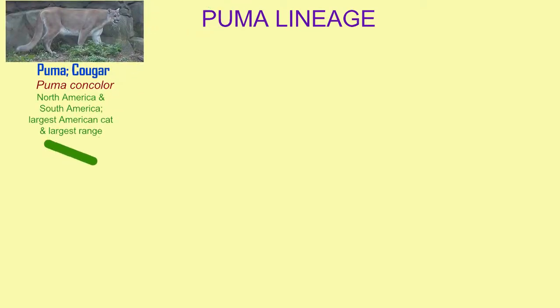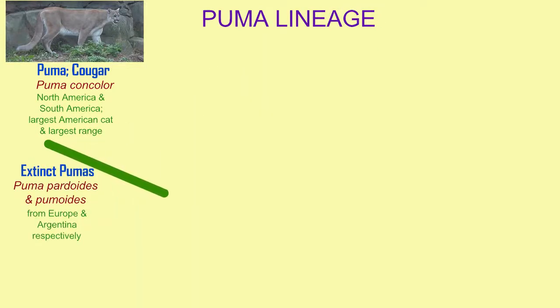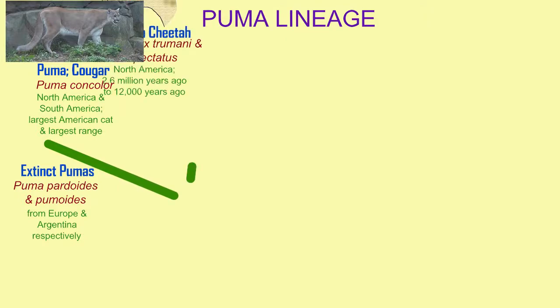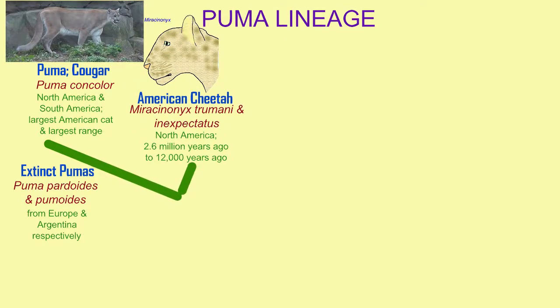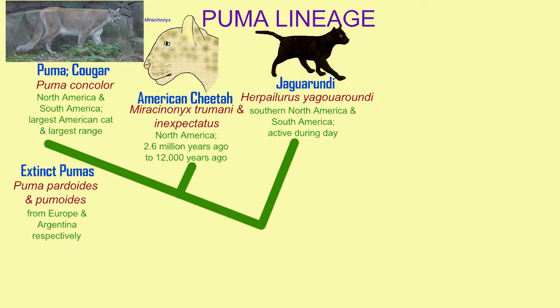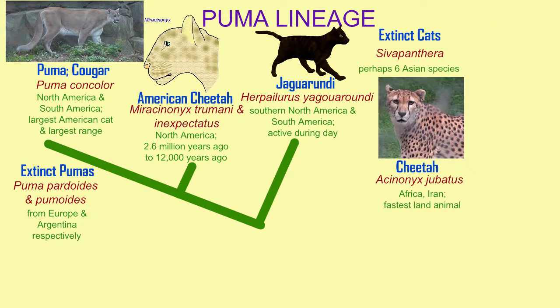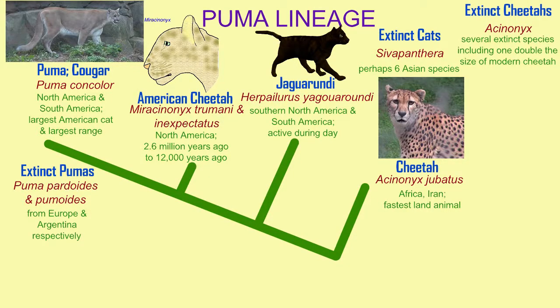The cat subfamily Felinae includes other lineages as well, such as the Puma lineage, which includes the modern puma and extinct members of this genus, an extinct North American cheetah, the jaguarundi of southern North America and South America, and the cheetah. All of these belong to a lineage, and genetically they are more similar to each other than to any cat outside this lineage.